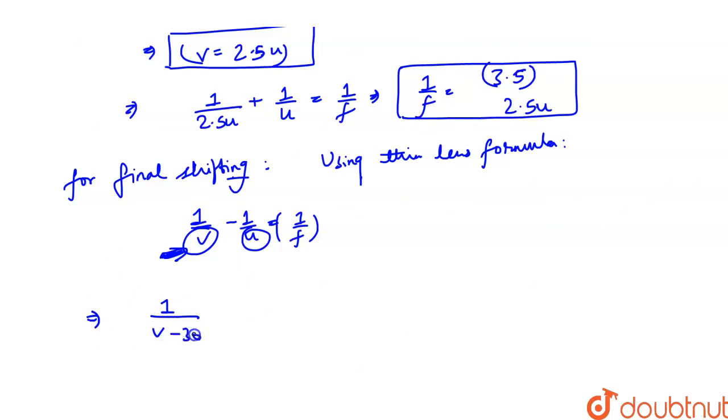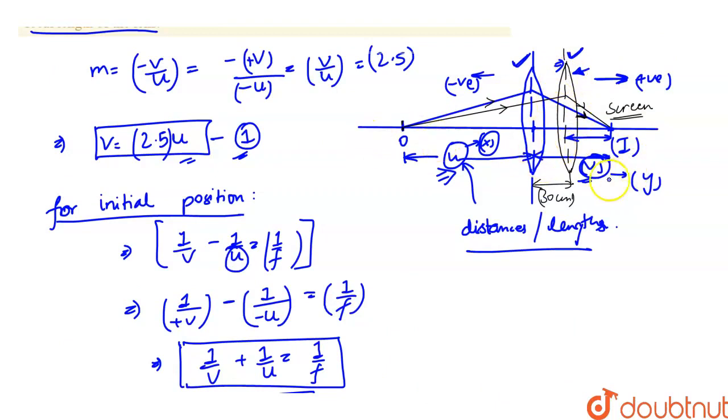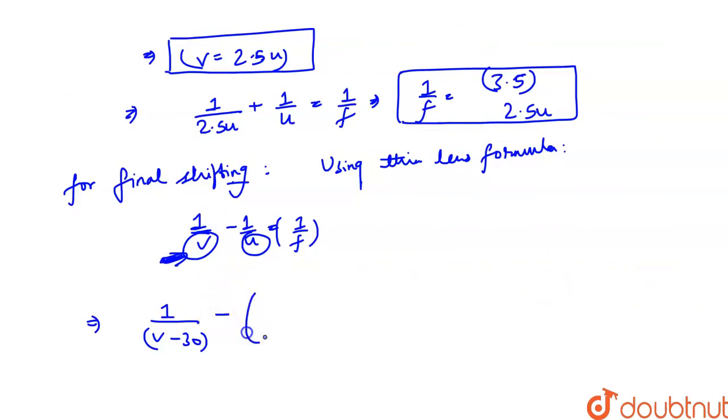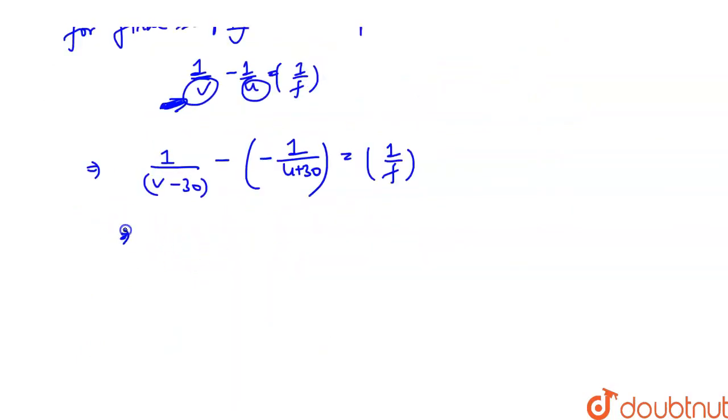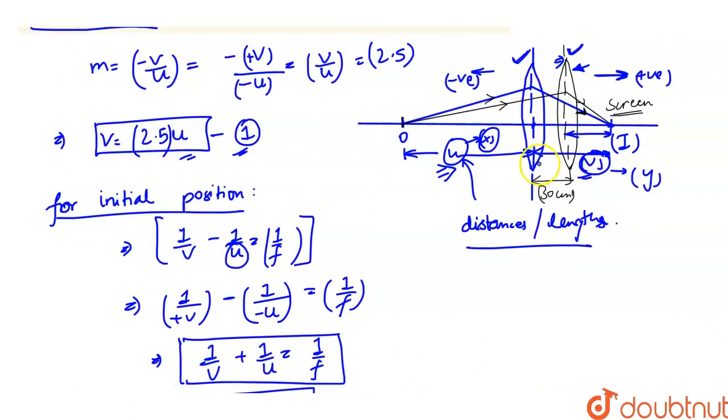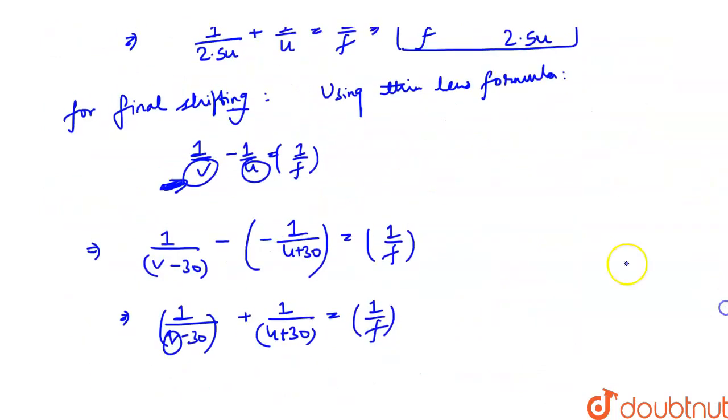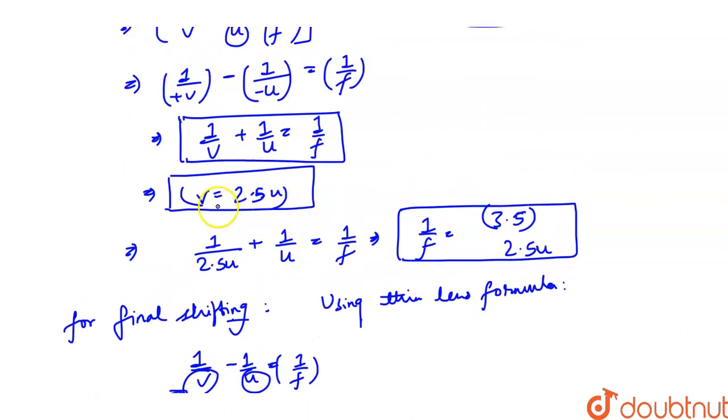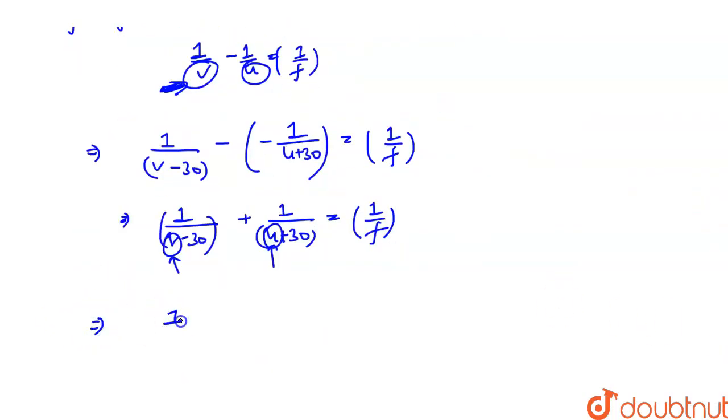So we have the values. 1 upon v minus 30 on the right side is positive. And u value—the final object distance is on the left side, so u plus 30. 1 upon v minus 30 minus 1 upon u plus 30, but this side is left side, so this is minus. This gives us 1 upon v minus 30 plus 1 upon u plus 30 equals 1 upon f.